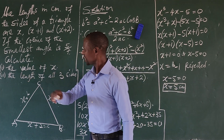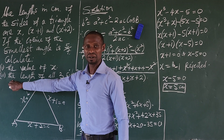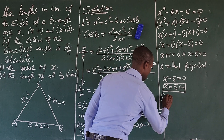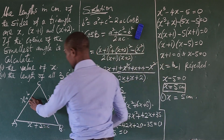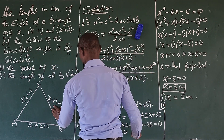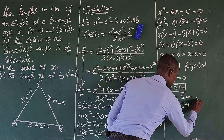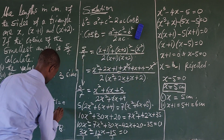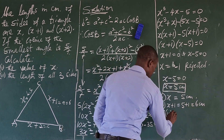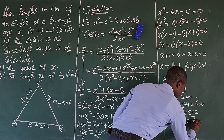For part two, finding all three side lengths: x = 5 cm, x + 1 = 5 + 1 = 6 cm, and x + 2 = 5 + 2 = 7 cm.